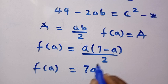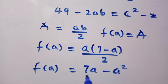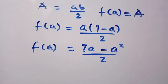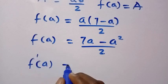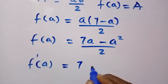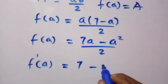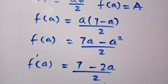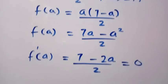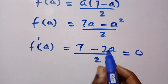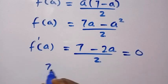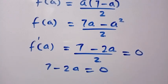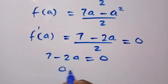Opening this expression, f(a) = (7a - a²)/2. We differentiate to get the first derivative: f'(a) = (7 - 2a)/2. At the turning point, f'(a) = 0, so 7 - 2a = 0, which gives us a = 7/2.